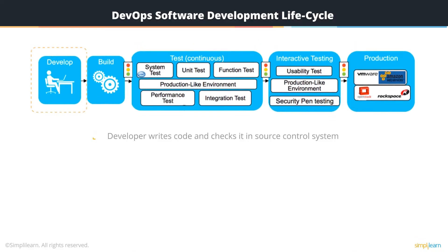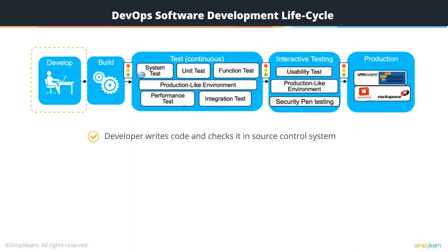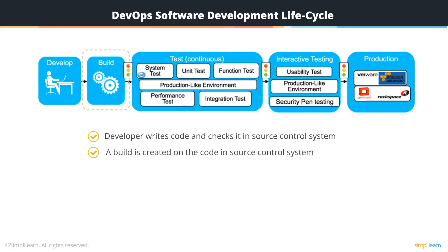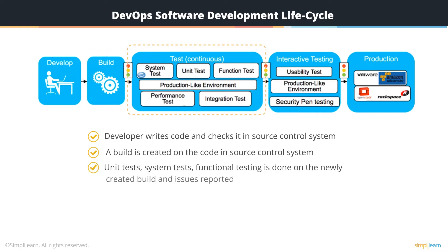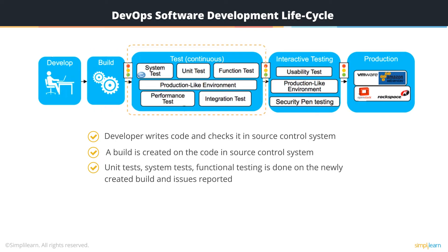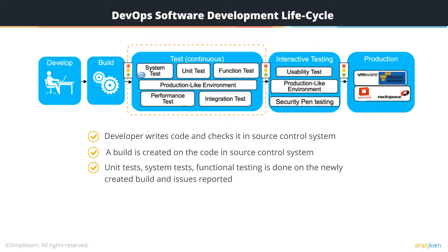To begin with, the developer writes the code and places it in the source code repository. From there, it is checked out and all the source code is integrated. The build is then created from the code in the source code repository. Various unit tests, system tests, and functional testing are done on the newly created build, and any issues found are reported back to the developer.